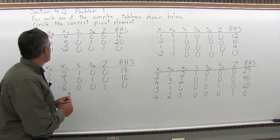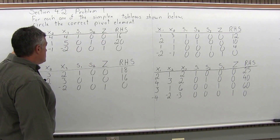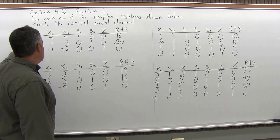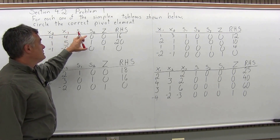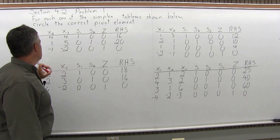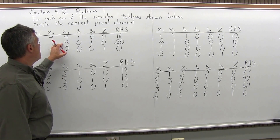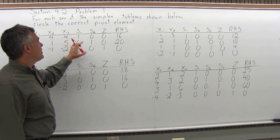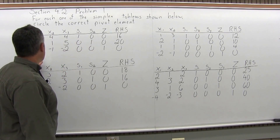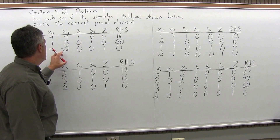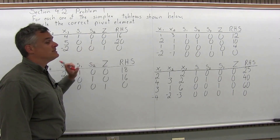The first tableau is one of the smaller ones. It has three rows. The top row is 1, 4, 4, 1, 0, 0, 16. The second row is 2, 1, 5, 0, 1, 0, 20. And the bottom row is negative 3, negative 1, negative 2, 0, 0, 1, 0.